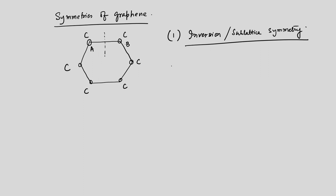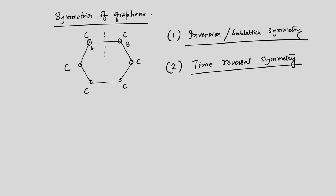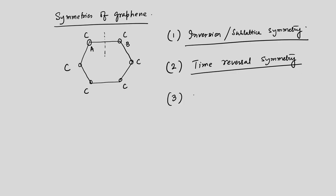This confirms that the Hamiltonian has inversion and sub-lattice symmetry. The next symmetry is time reversal symmetry. Since there is no spin in this problem, the time reversal operation is simply complex conjugation. In some literature it is written with a unitary operator multiplied by complex conjugation, but they mean the same thing. There is also a third symmetry, which is a crystalline symmetry.